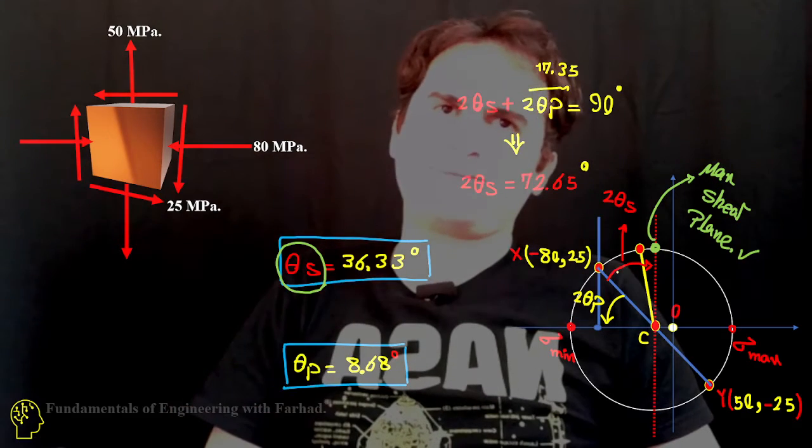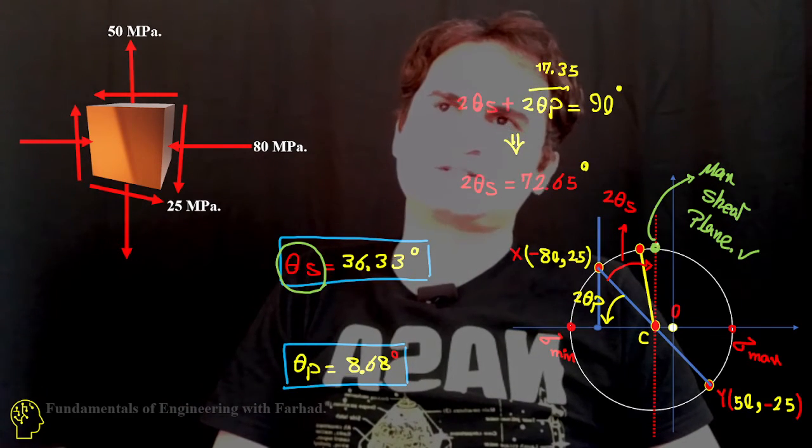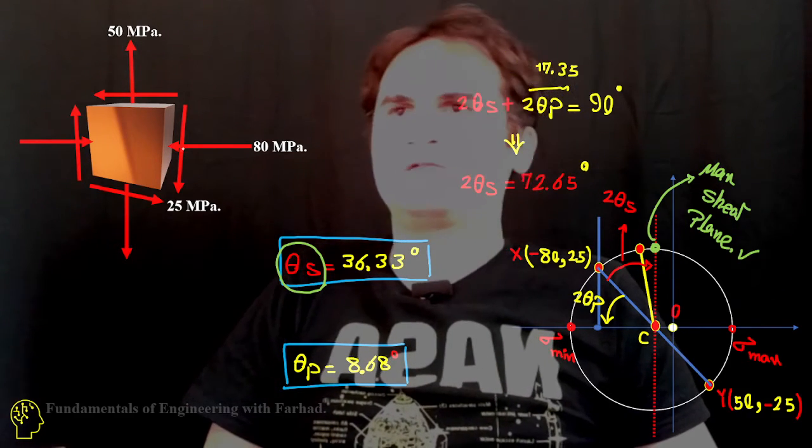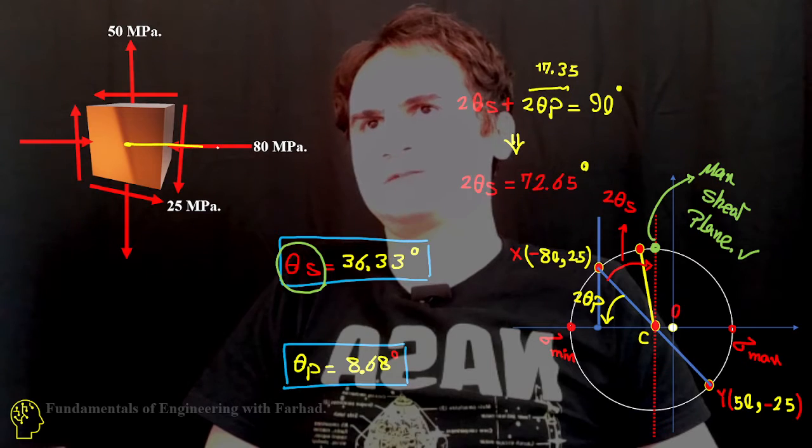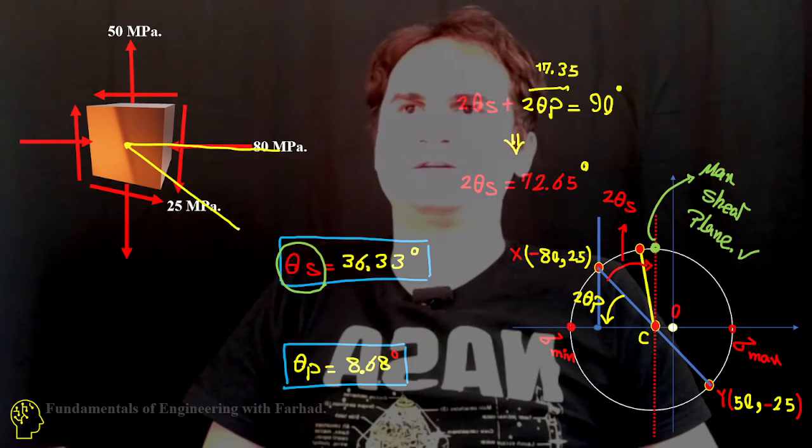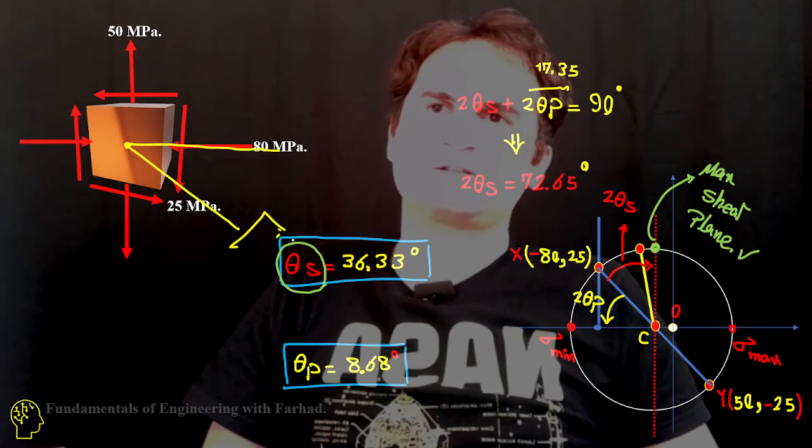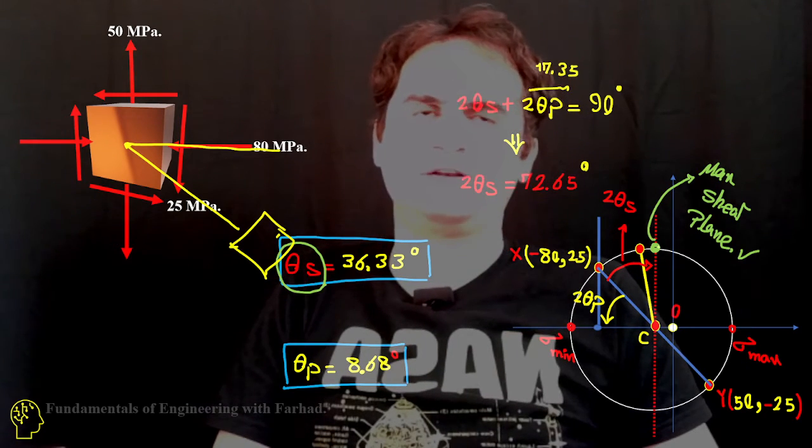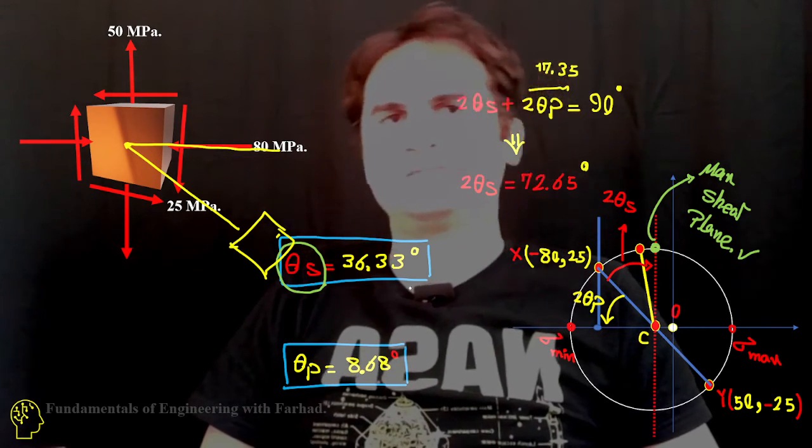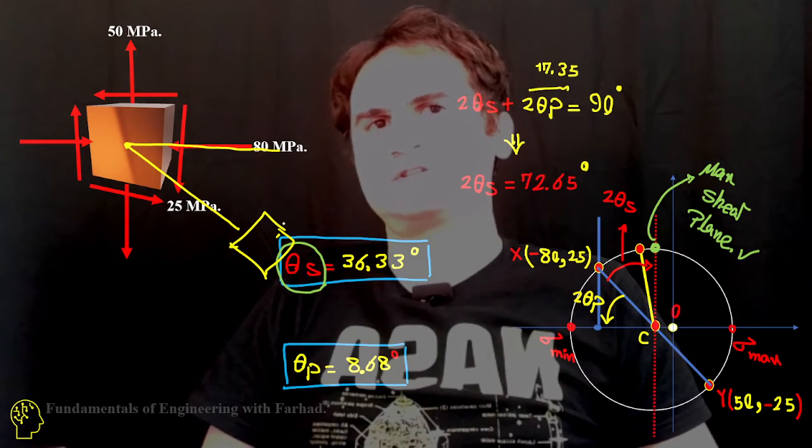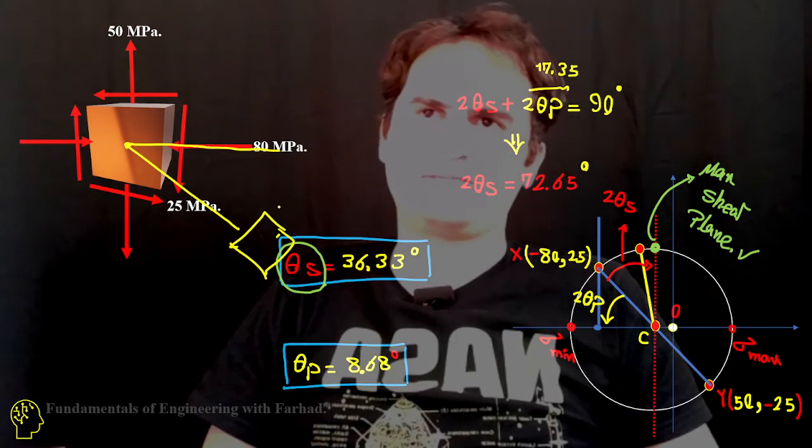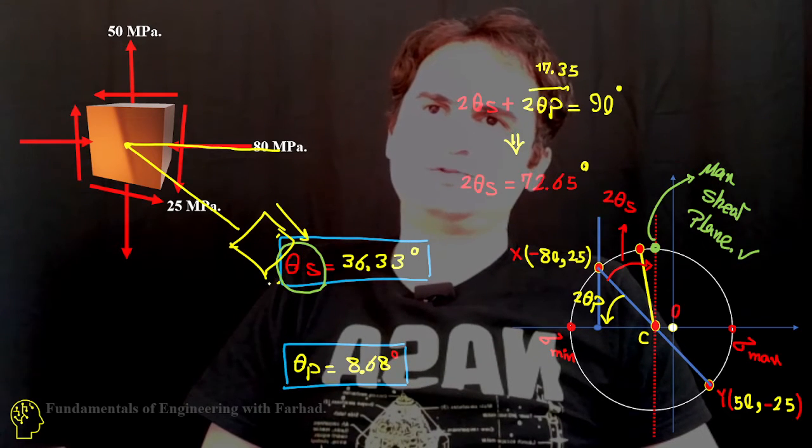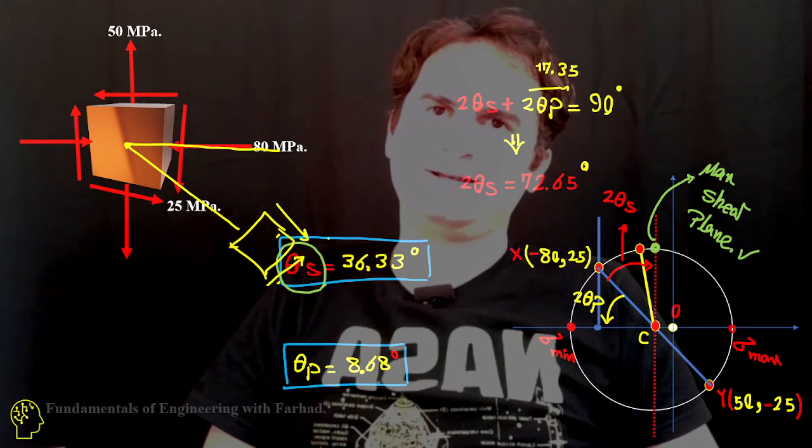So you can easily see it just gives us a clockwise rotation, which makes us rotate to the element with the maximum shear, which is equal to r, maximum shear which is equal to r, and that's 69.64.